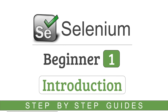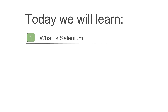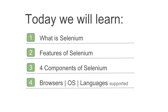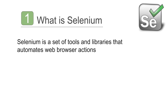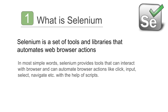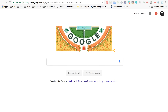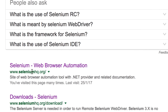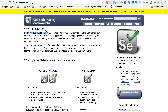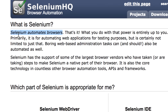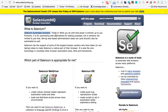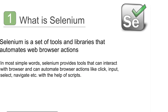Hello and welcome to this session on Selenium. Today we are going to learn what Selenium is, its features, the four major components, and what browsers, operating systems, and languages it supports. Selenium is a set of libraries that help us automate web browser actions. If you go to SeleniumHQ.org, the official website, the very first line says 'Selenium automates browsers. That's it.' And once you get the power to automate a browser, the things you can do with it are actually unlimited.